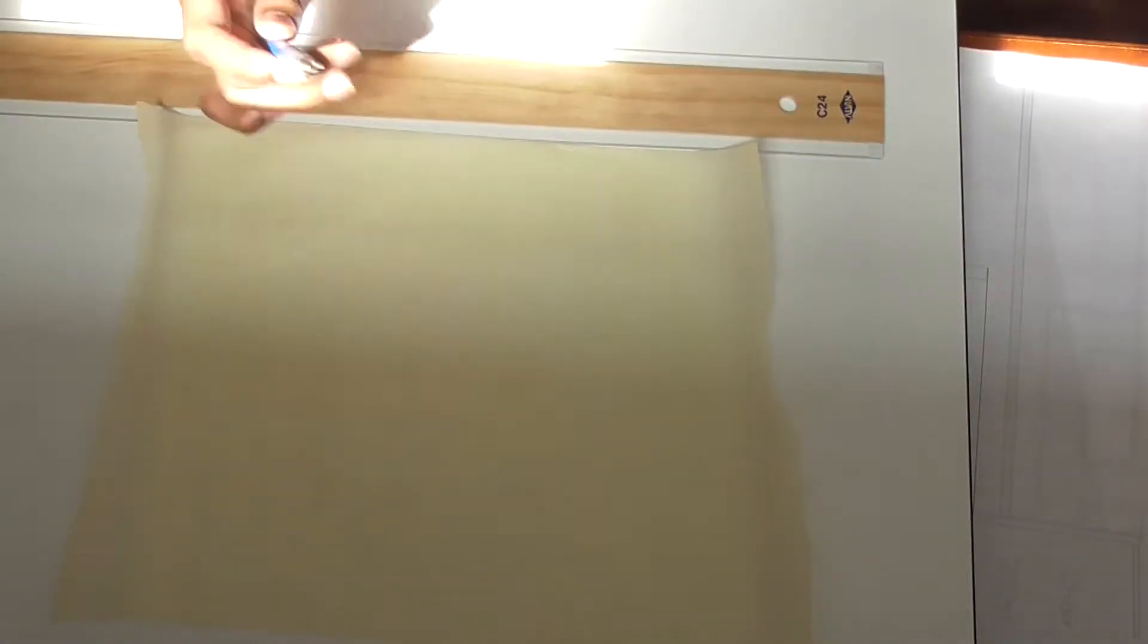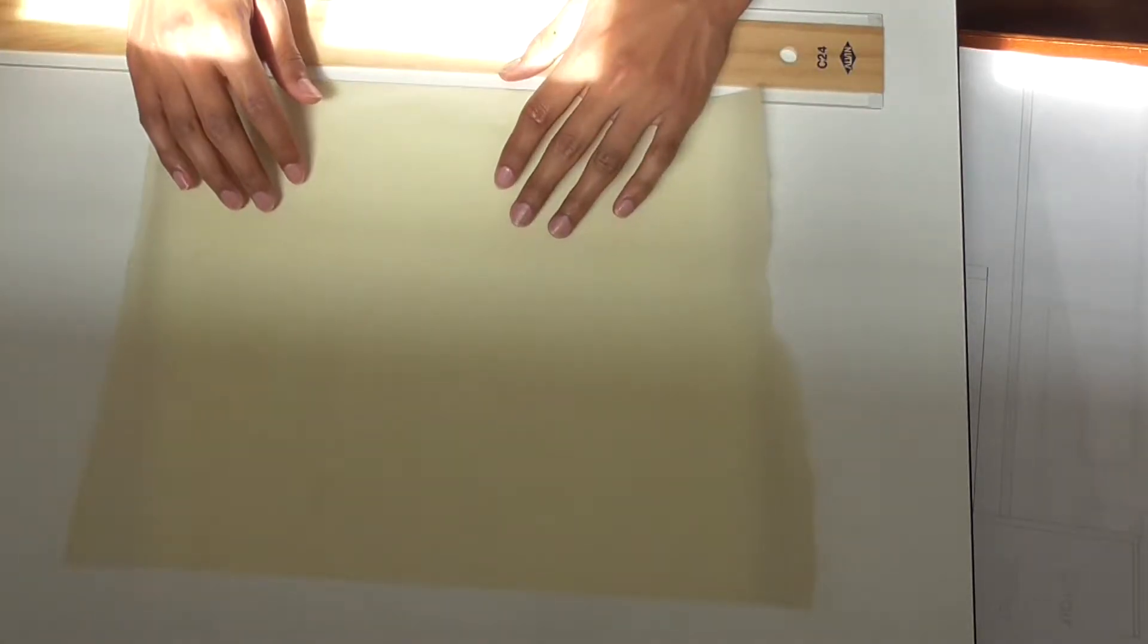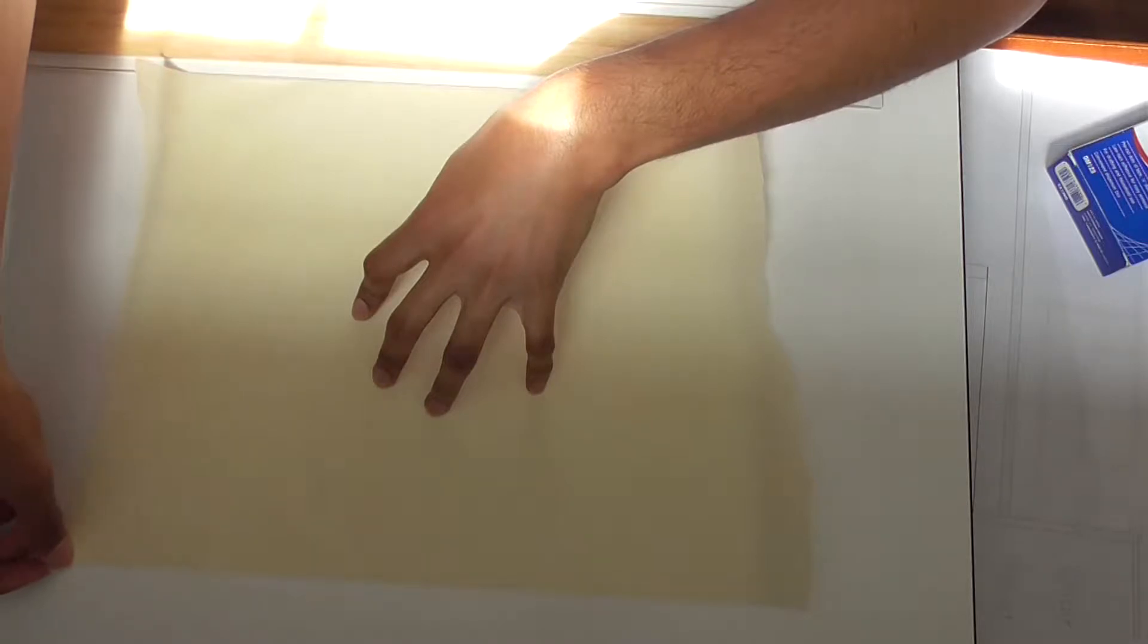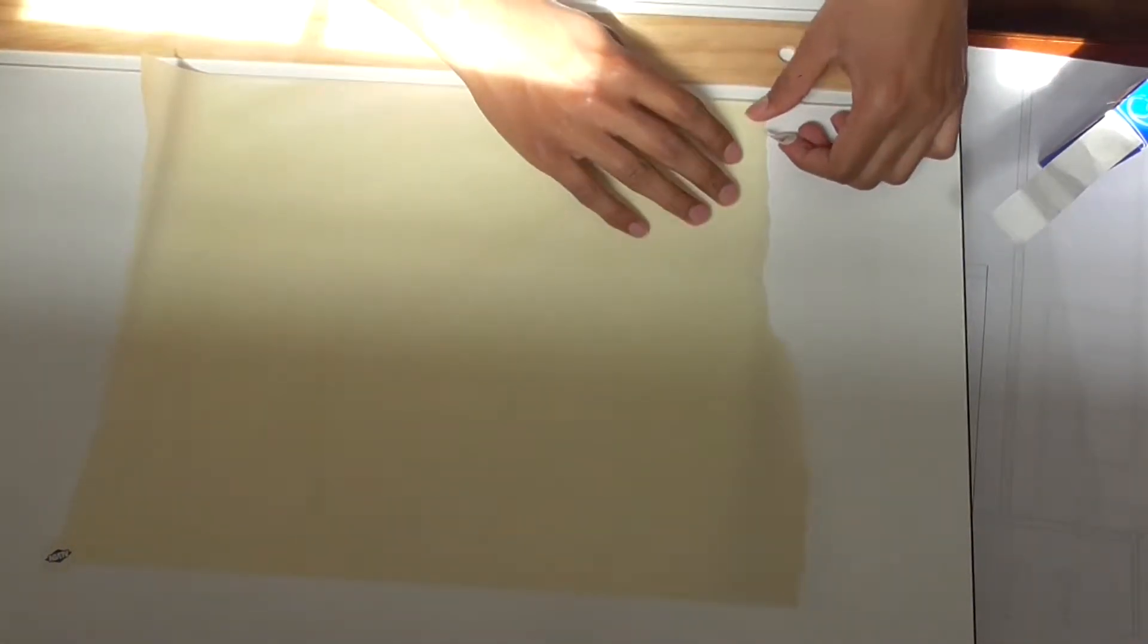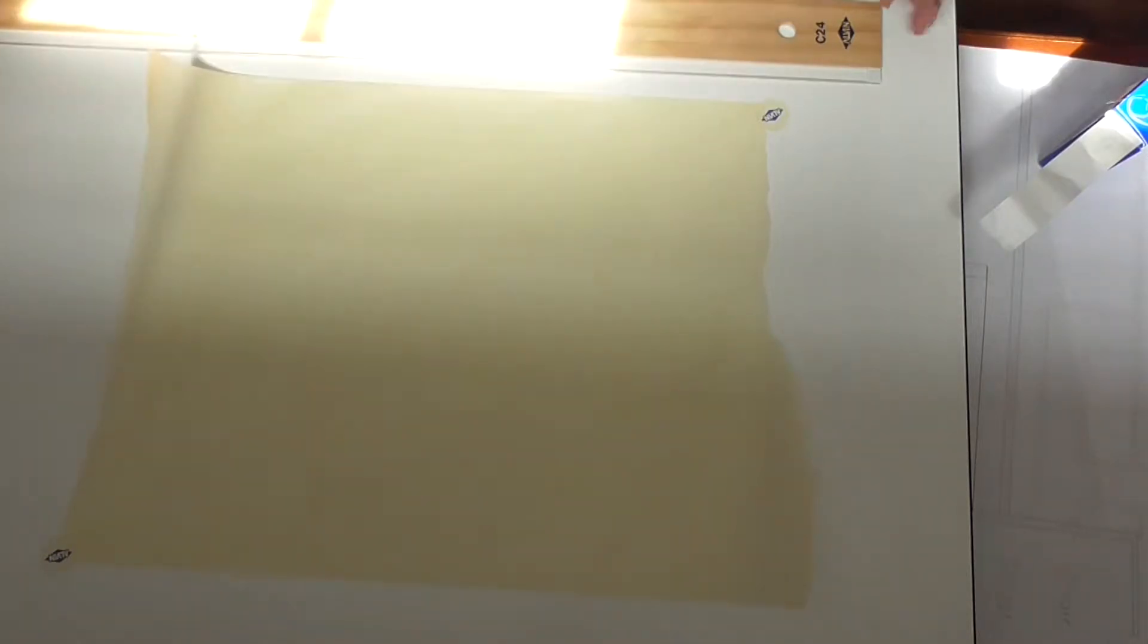So we first start off by getting our pencils ready and our pens. So that allows us to make sure that our lines are nice and clear. And we're going to be lining up our trace paper with our straight edge or our T-square. So after you've lined it up, make sure that you stick it down with some drafting dots or some masking tape so that it doesn't move in place as you're making those lines. And it just stays steady. And I like to just keep it on the upper and bottom corners so that I can slip on the floor plan right underneath.